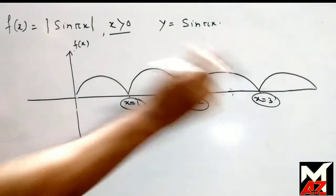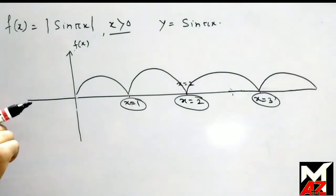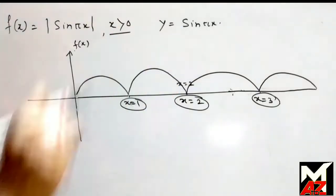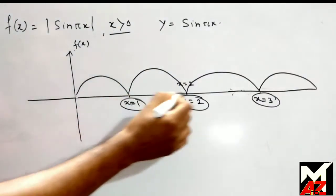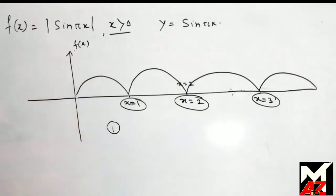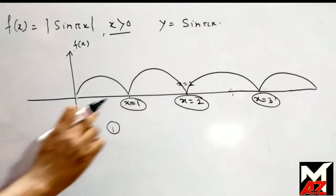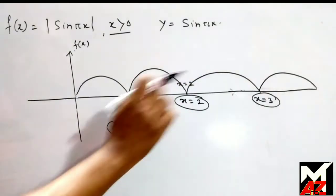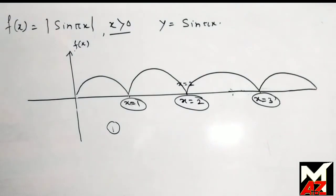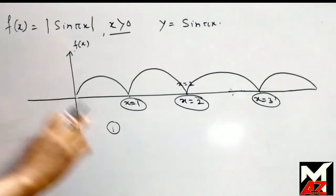So at these points — here, here, and here — that is, for all integral values of x, the differentiation does not exist. Otherwise, the curve is continuous, and all the other points except integral values are differentiable. So our Option 1, that is, 'differentiable except for the integral value of x,' is correct.